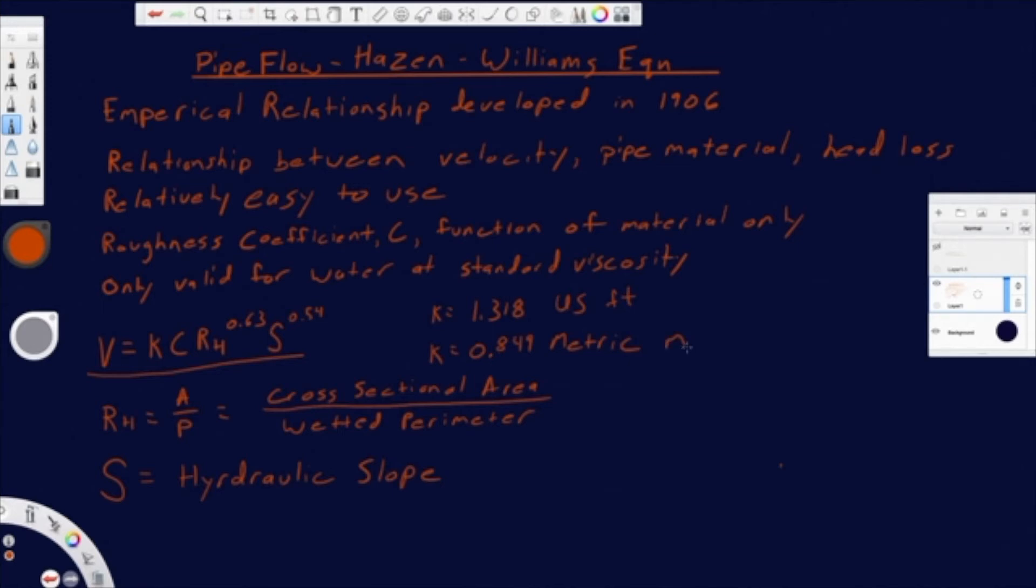We'll come back to some of these, but just to explain some of the more maybe a little bit more complicated variables here. The hydraulic radius is going to be your cross-sectional area divided by your wetted perimeter. Now, in pipes, this is not usually that difficult compared to like open channel flow.